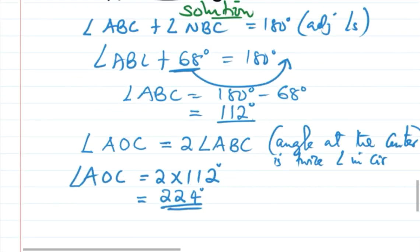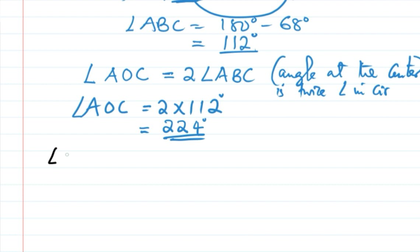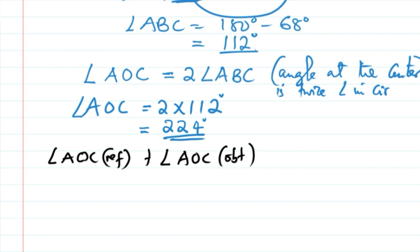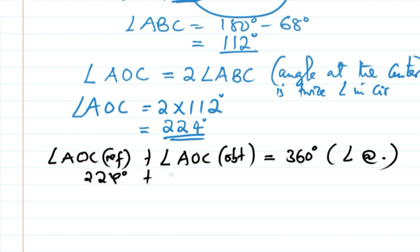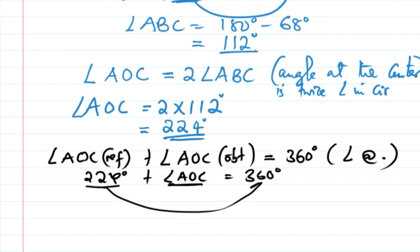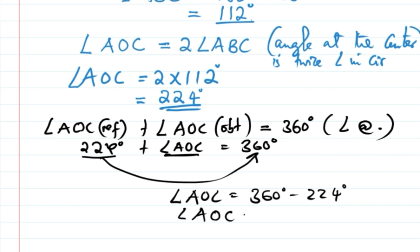To find the actual angle AOC, bear in mind that angles at a point sum to 360 degrees. So reflex angle AOC plus angle AOC equals 360 degrees. Therefore angle AOC equals 360 degrees minus 224 degrees, which gives us 136 degrees.